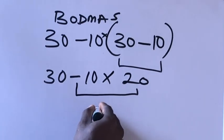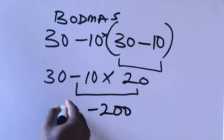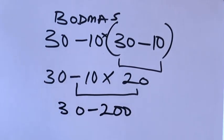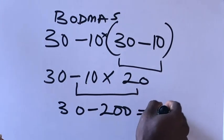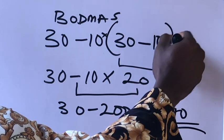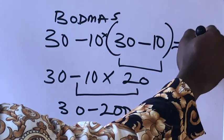This will give us negative 200. Bring down the 30 here. 30 minus 200 will give us negative 170. So our answer is negative 170.